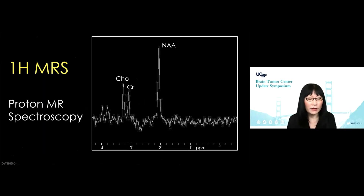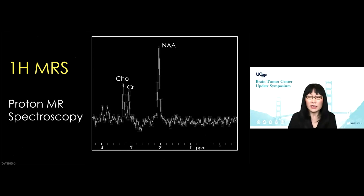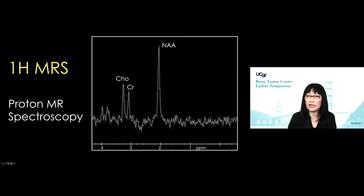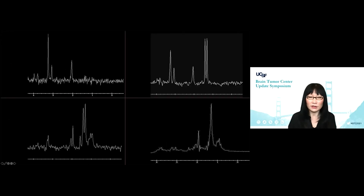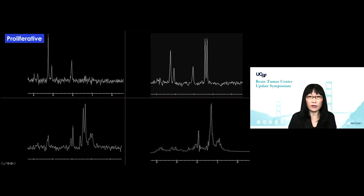And I'm going to finish off with proton MR spectroscopy — this is a super powerful technique. What you're looking at is a normal spectroscopic appearance of a normal brain. At two parts per million, we see robust N-acetyl aspartate, the neuronal marker. About half as high is the normal choline, and we use creatine as our internal reference. This takes about two minutes of scanning time. There are four patterns we look for in brain tumor patients: the proliferative, hypoxic, infectious, and necrotic.